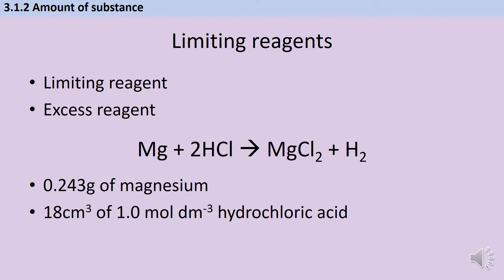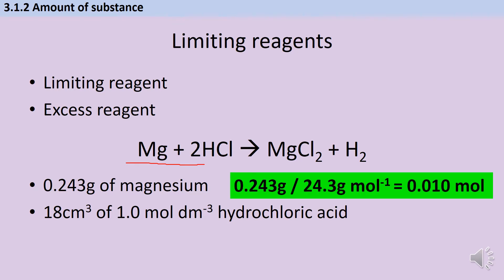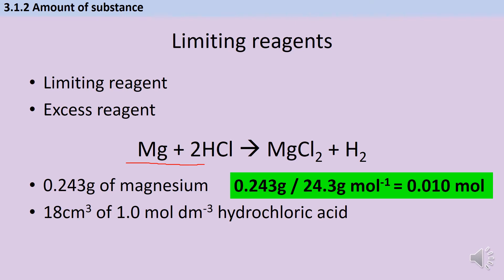Here's a second example, which is less straightforward for two reasons: firstly, we have a solid reagent requiring a different equation, and secondly, we have coefficients. My first step is again to work out the number of moles of each reactant. For my magnesium, I use mass ÷ Mr: 0.243 ÷ 24.3 = 0.010 moles. Then 18 cm³ of 1 M hydrochloric acid gives me 0.018 moles.